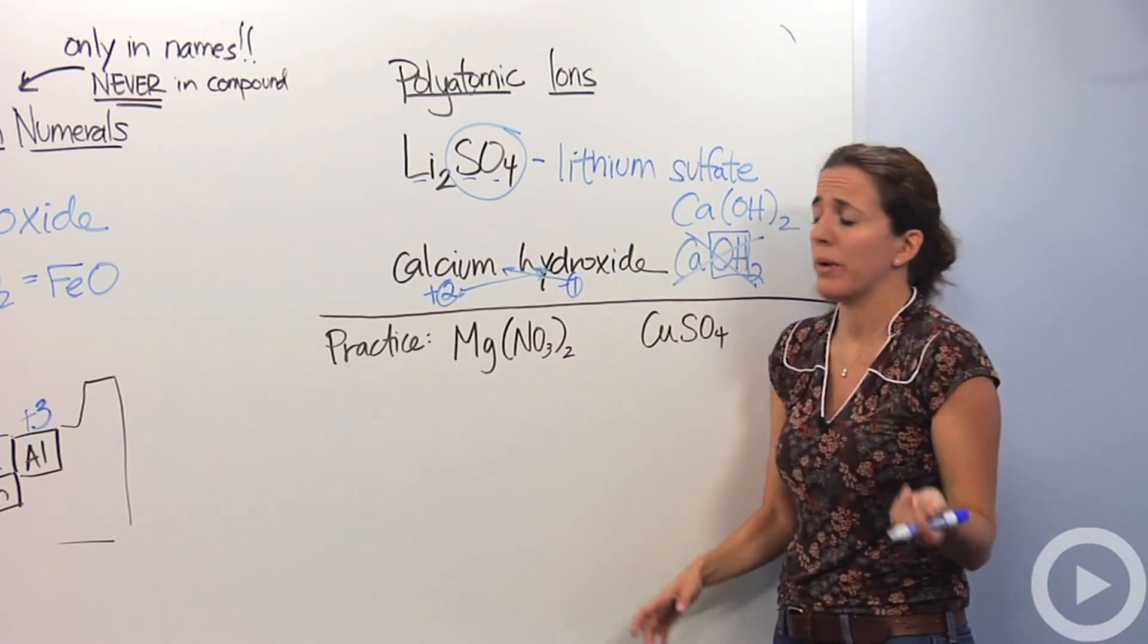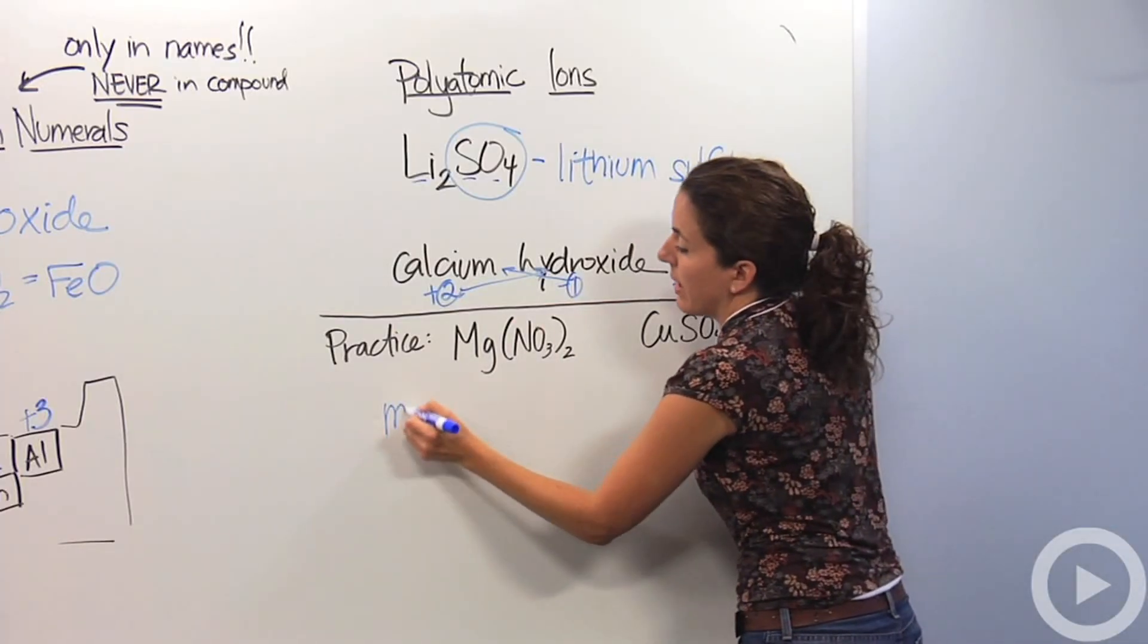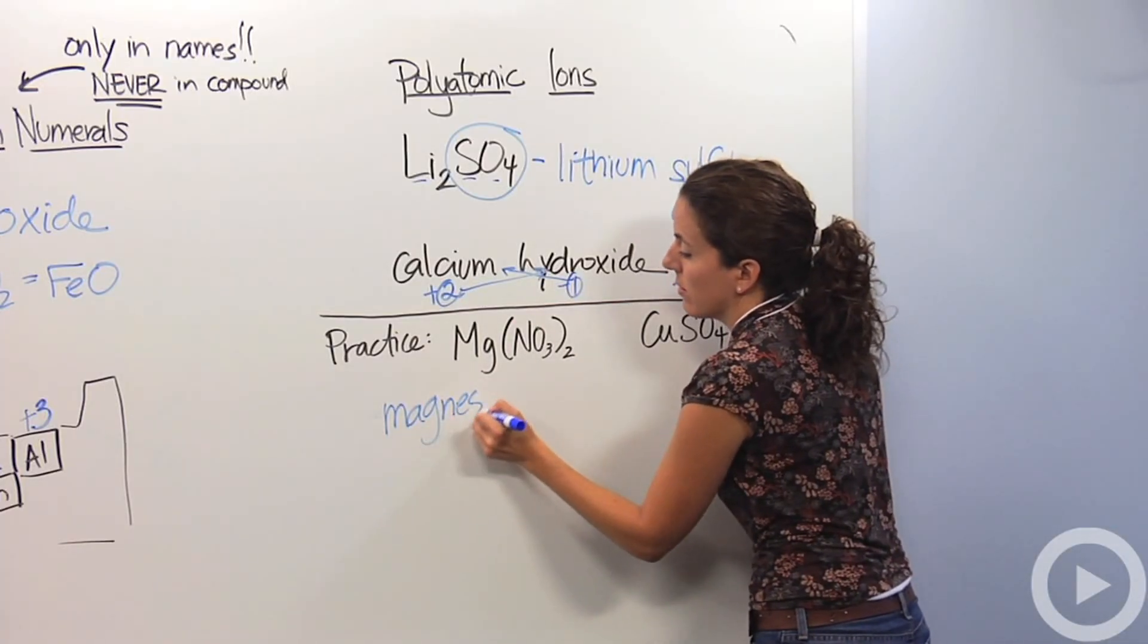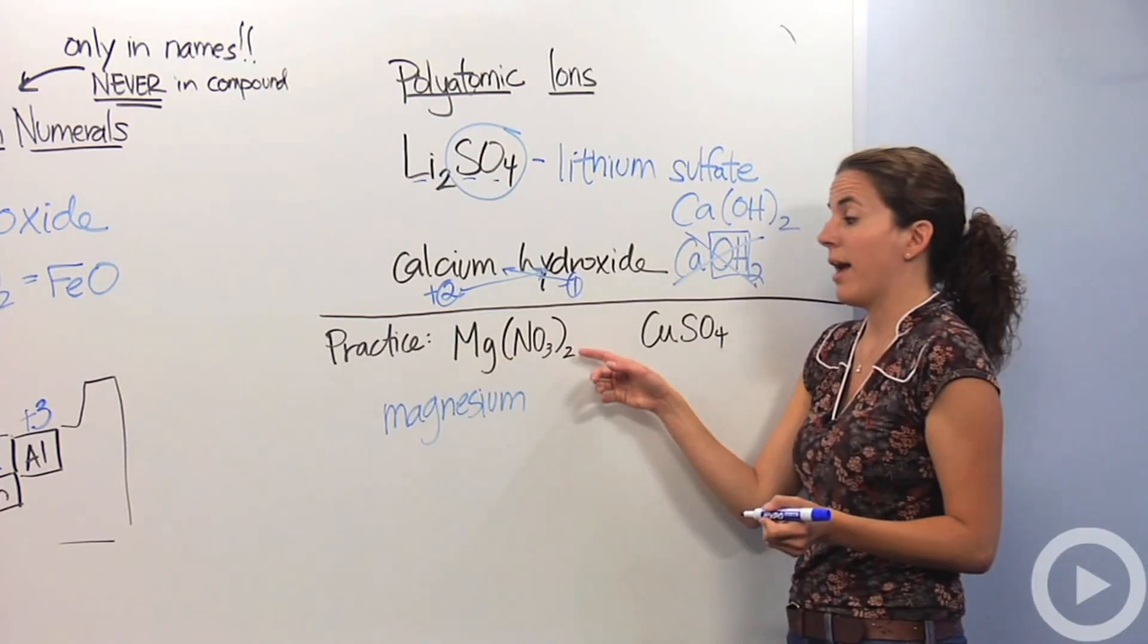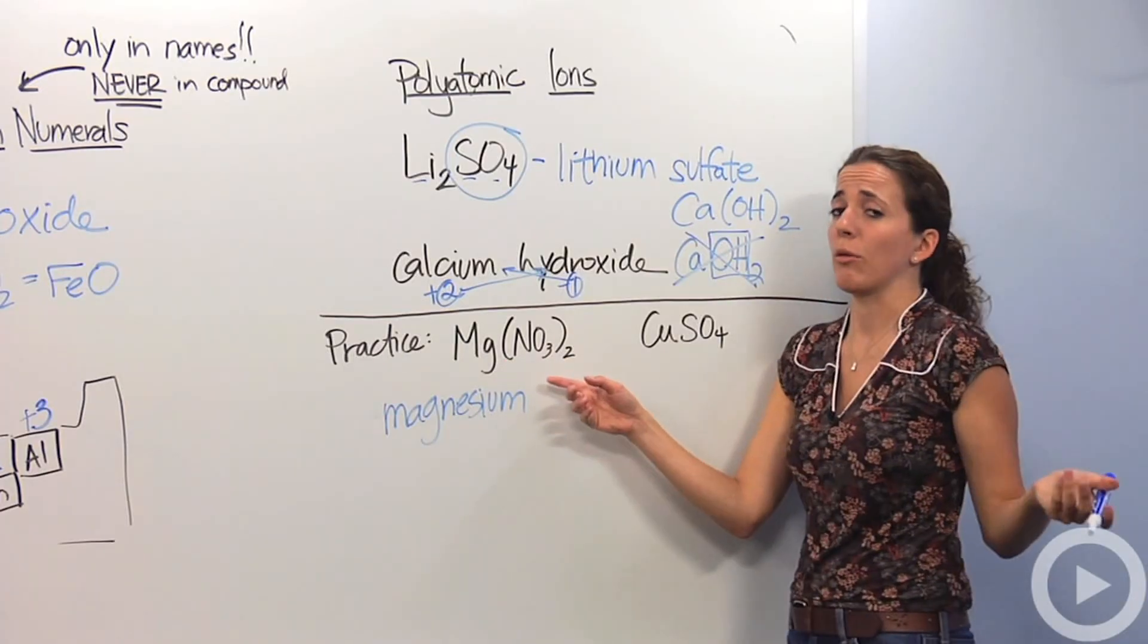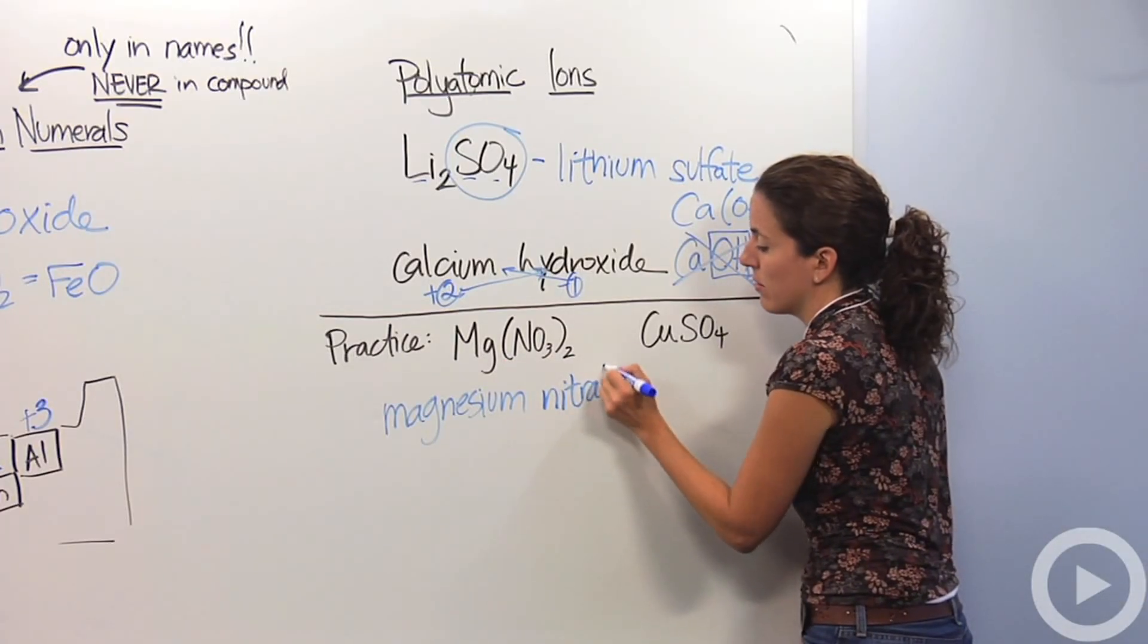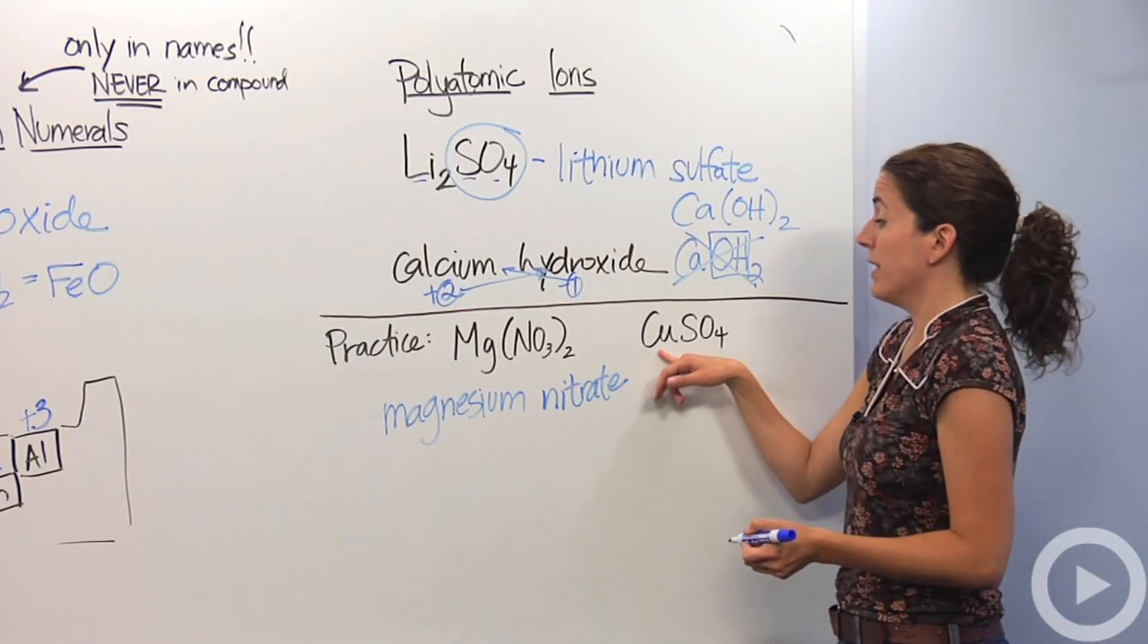Let's practice this real quick. This guy, we're going to do our name, magnesium. And here again, oh no, there's more than one atom. We know if you have to go to a polyatomic ion list, nitrate.